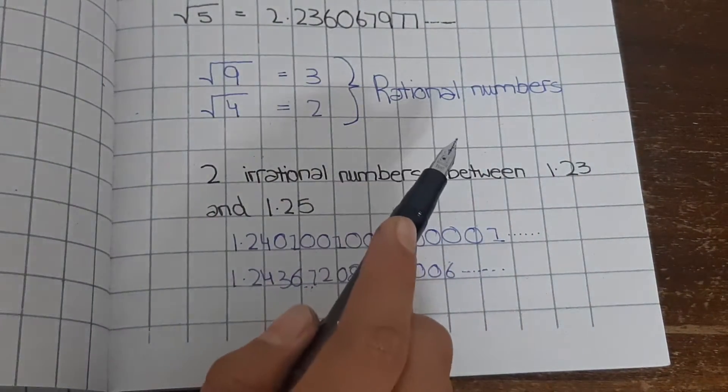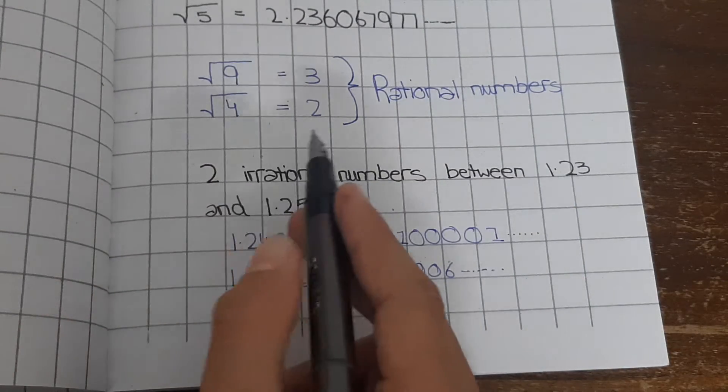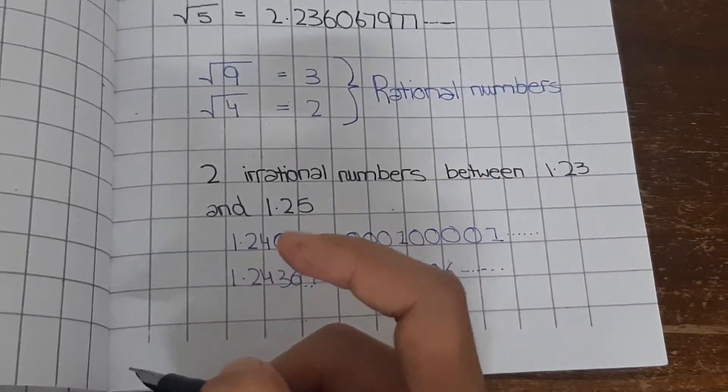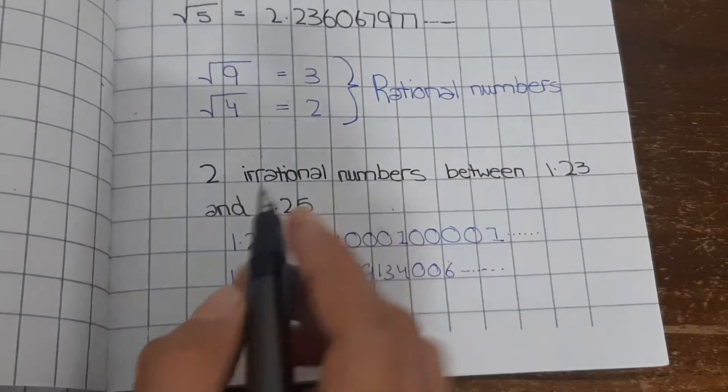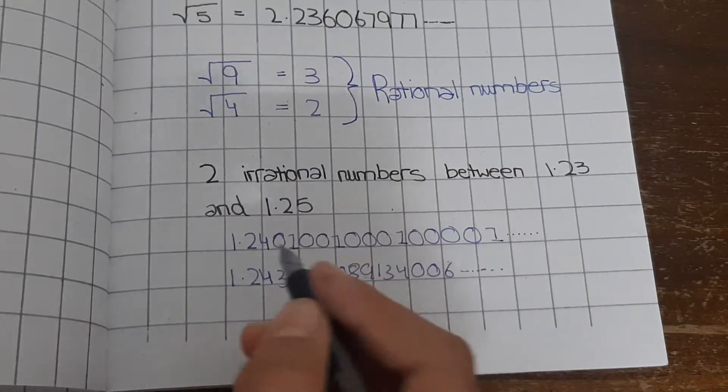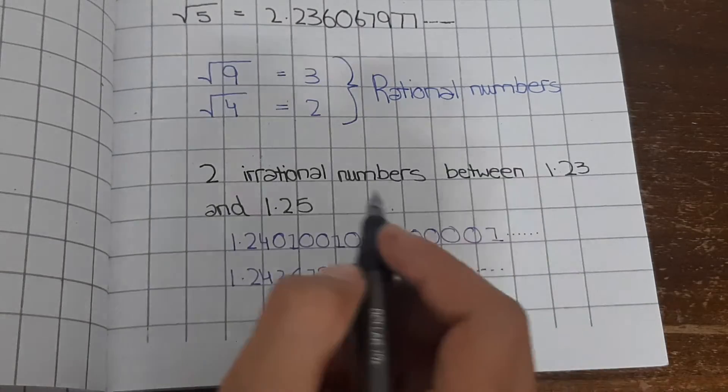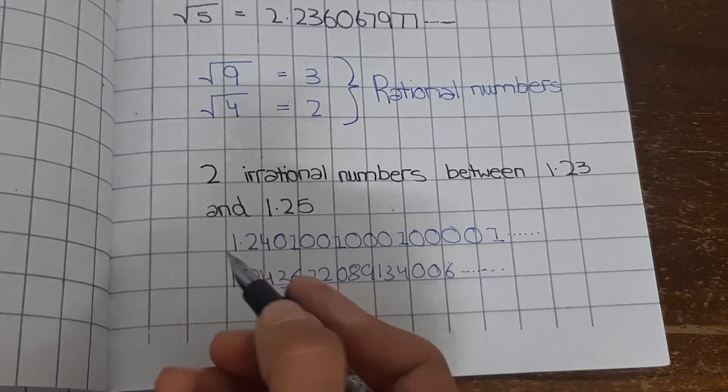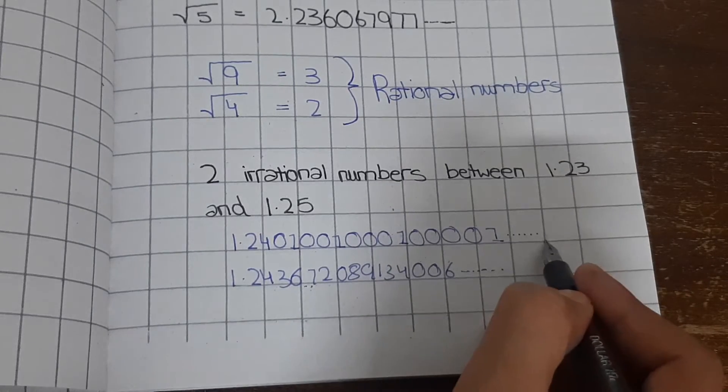Now, if someone asks you to tell them two irrational numbers between 1.23 and 1.25, you are not going to actually search up for them. You are going to write like these: 1.24 between 1.23 and 1.25 comes 1.24 and you are going to write infinite numbers, not actually infinite. At the end you will write these dots and it should not recur decimals.